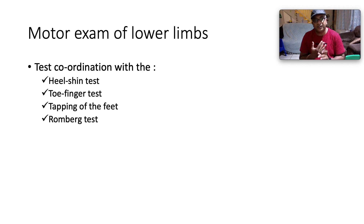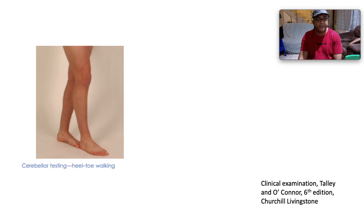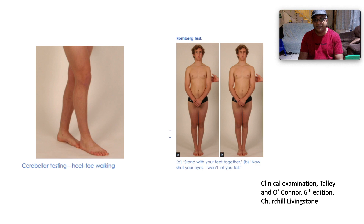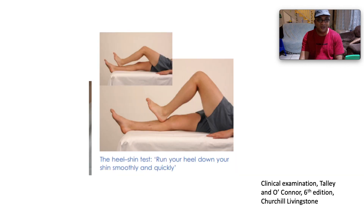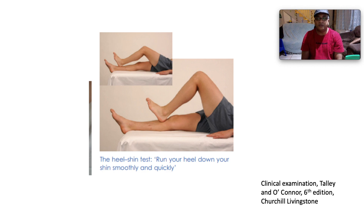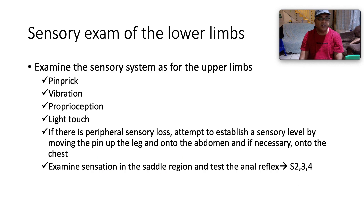For coordination, perform the heel-shin test, toe-finger test, foot tapping, and the Romberg test. Tandem (heel-to-toe) walking: a patient with a cerebellar lesion will stagger and become ataxic. Romberg test: ask the patient to stand with feet together and close their eyes — if they are unsteady with eyes closed, that is a positive Romberg sign indicating proprioceptive loss. With a cerebellar lesion, unsteadiness is present with both eyes open and closed. For the heel-shin test, ask the patient to run their heel down their shin smoothly and quickly — wobbling or imbalance indicates a positive test and cerebellar lesion.